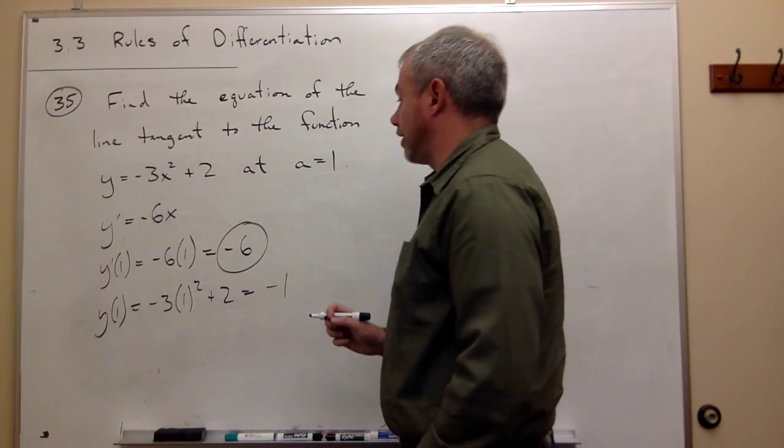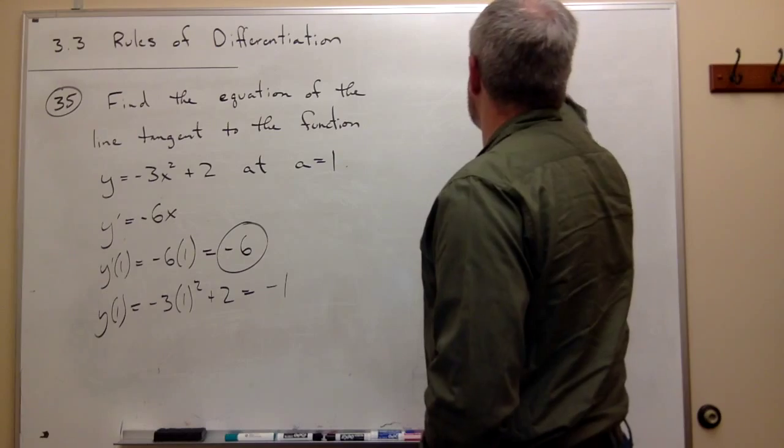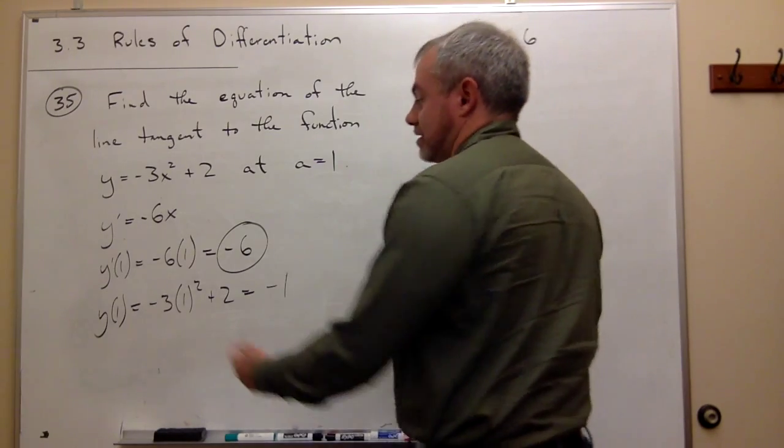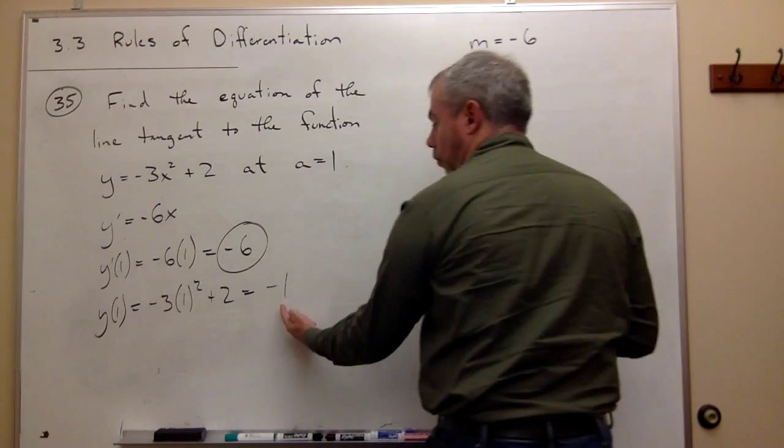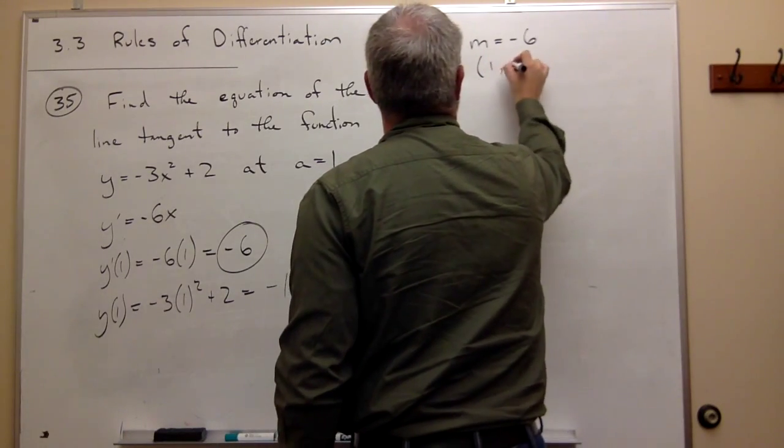So the point I'm looking for—I've got my slope m, it's negative 6, and I've got my point: if x is 1, y is negative 1. So the point is (1, -1).